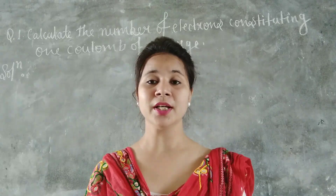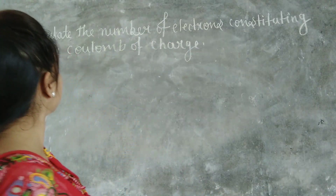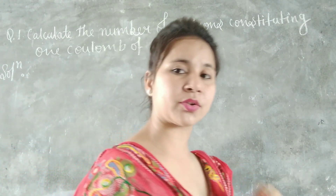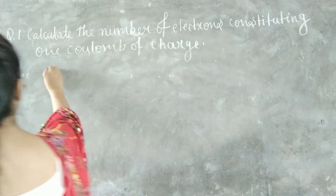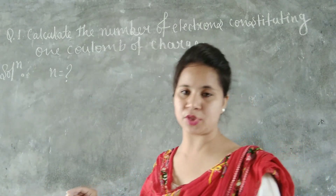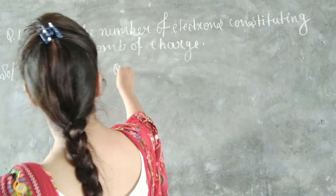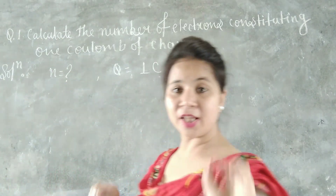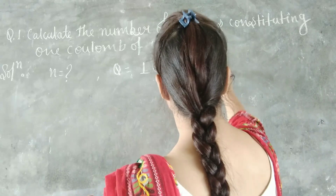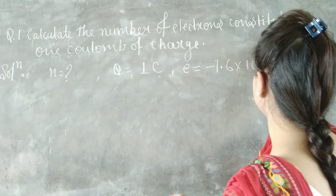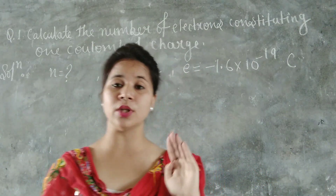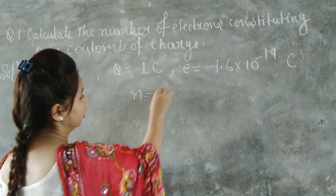Now we are going to discuss a practice question: calculate the number of electrons constituting one coulomb of charge. We need to find the value of n, the number of electrons, given that q is equal to 1 coulomb. As we know, the charge on one electron is e equal to 1.6 into 10 to the power minus 19 coulomb. So the formula is n is equal to q upon e.